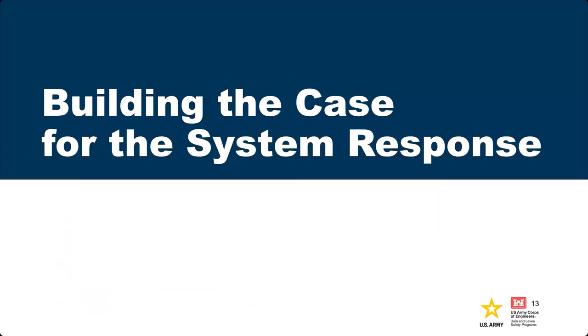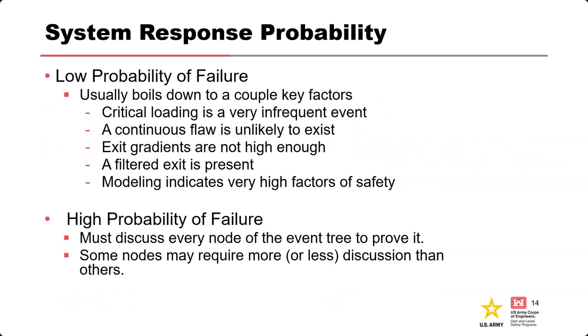That takes us into building the case for the system response. Generally the system response can go one of two ways: you'll either be making the case for a low probability of failure or a high probability of failure. For a low probability of failure, it usually boils down to just a couple of key factors — either we have a critical loading that's very infrequent, a continuous flaw that doesn't exist, gradients that aren't high enough, or a filtered exit.